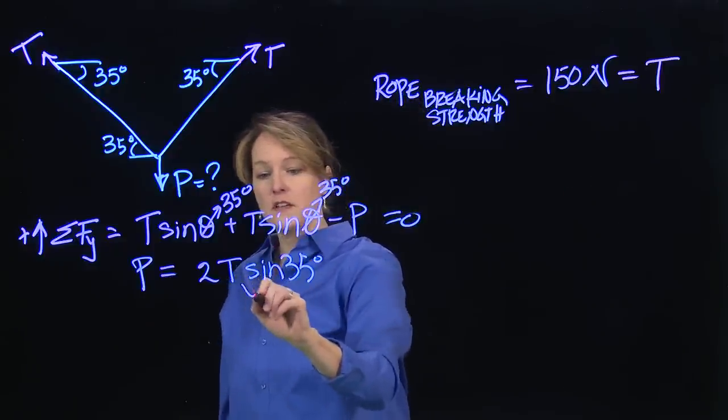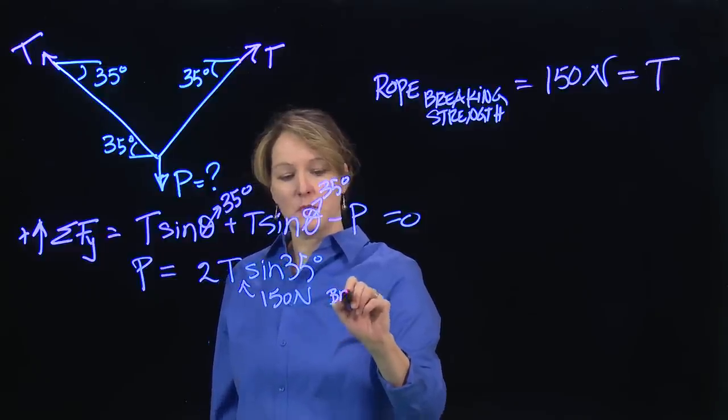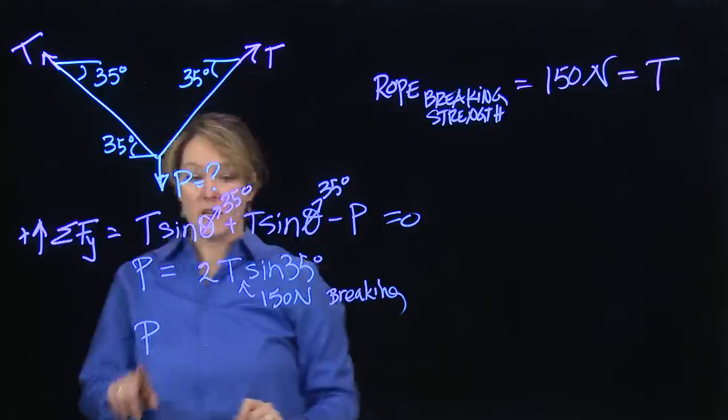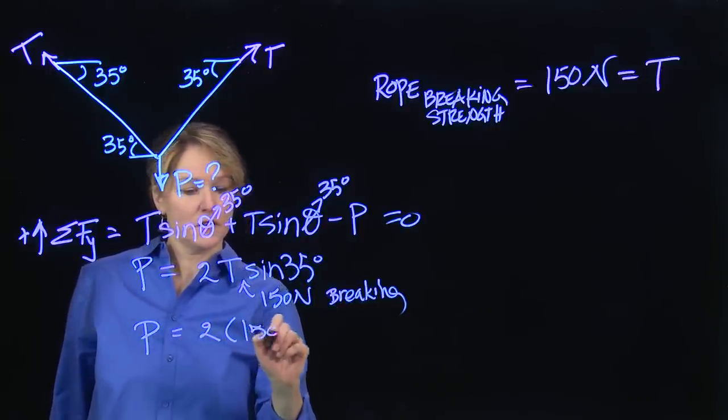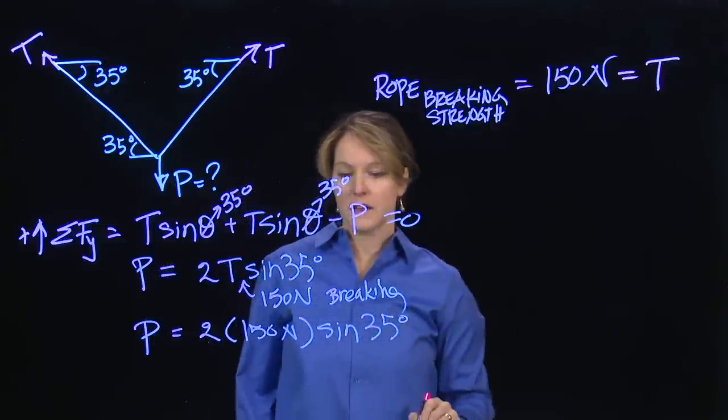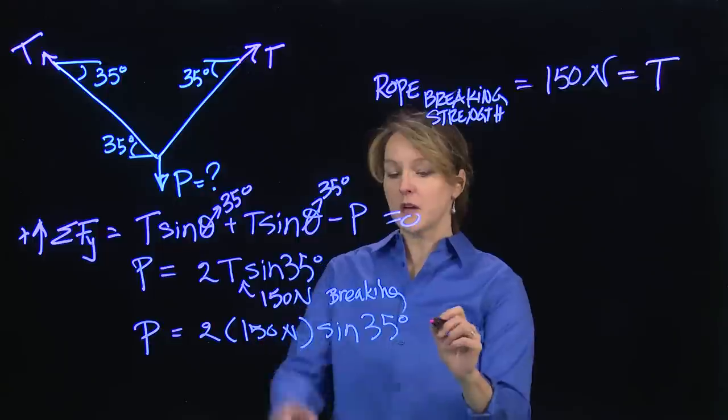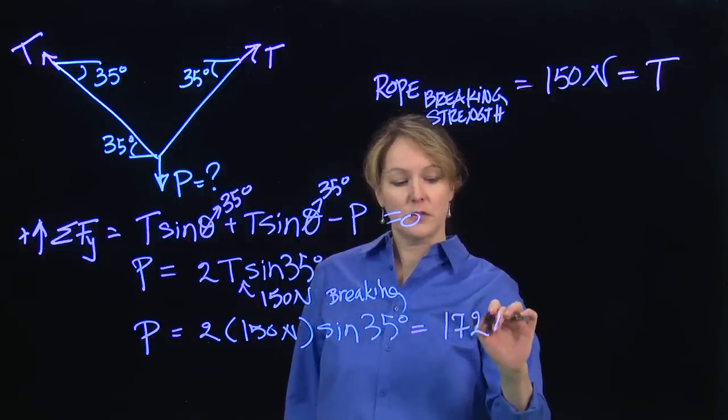So that's going to go in here for T, 150, and that's the breaking point. So I can solve for this load P. The load P is then going to be 2 times 150 Newtons times the sine of 35 degrees. But now that gives me a number. So that's going to be how much load I can put on before I break this rope. And that number turns out to be 172 Newtons.